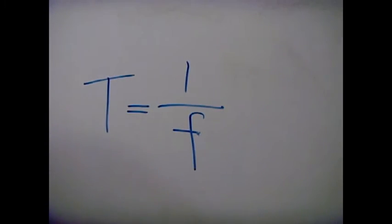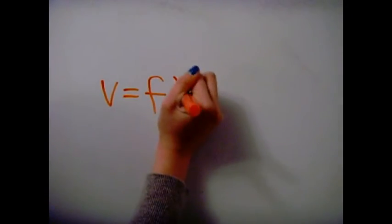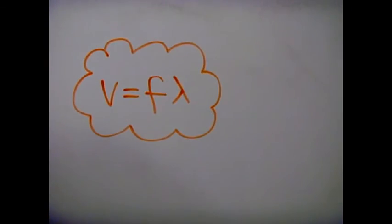To calculate the period of the wave, you use this equation: t equals one over f. To find the wave speed of a wave, you multiply the frequency and the wavelength.